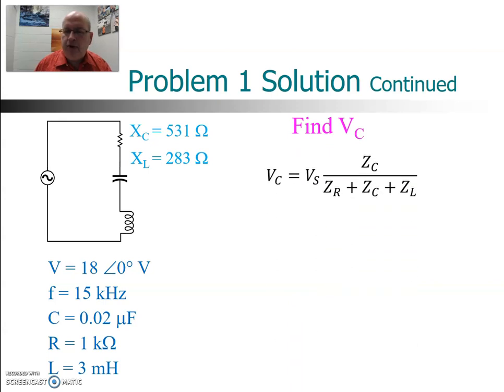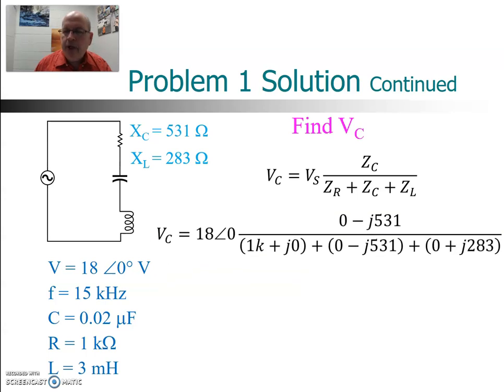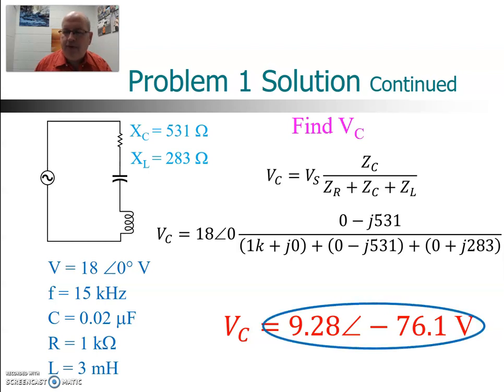Well VC is equal to the source voltage multiplied by the Z of the capacitor divided by the total Zs, all the Zs added together. So that looks like this: 18∠0°. The Z of the capacitor is 0-j531. And the total of the other Zs, the resistor is 1kΩ+j0. Capacitor we just saw is 0-j531. And the inductor is 0+j283. And if you enter that in your calculator, calculator should give you 9.28 volts at an angle of -76.1°.